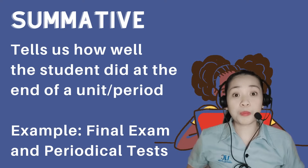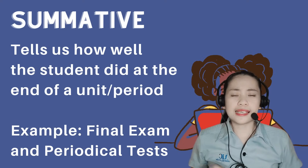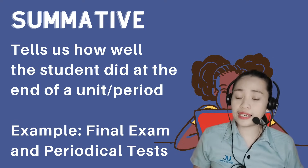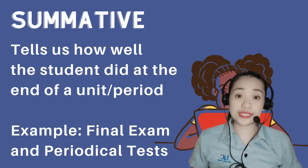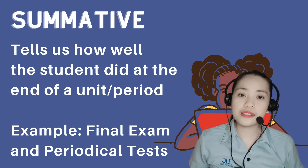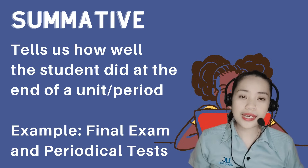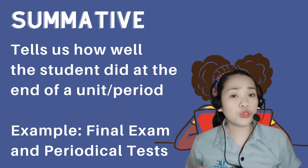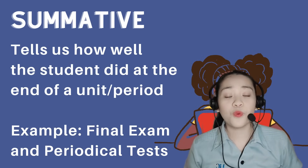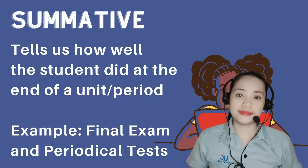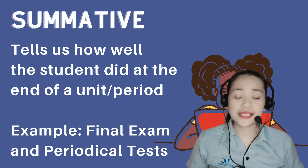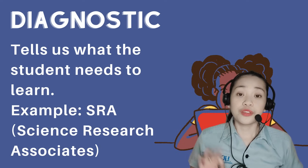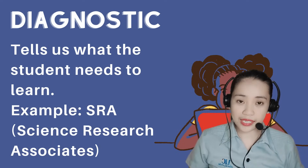Second is summative assessment. It tells us how well the student did at the end of a unit or task, and it determines the extent to which learning objectives for a course are met and why. Examples include final examinations and periodical tests.